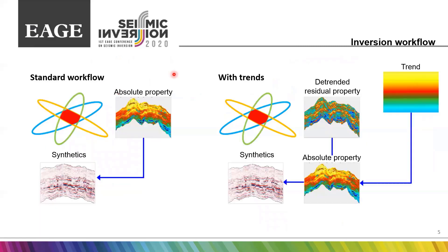The inversion in the case with trends is done the same way as without trends, using the trended residual properties during modeling instead of absolute values. In the standard workflow, the process models absolute values of elastic properties and they are used for synthetic generation inside the algorithm. In the workflow with trends, it models the trended residual properties. Fixed trends are then added to create absolute values of elastic properties for further synthetics generation.